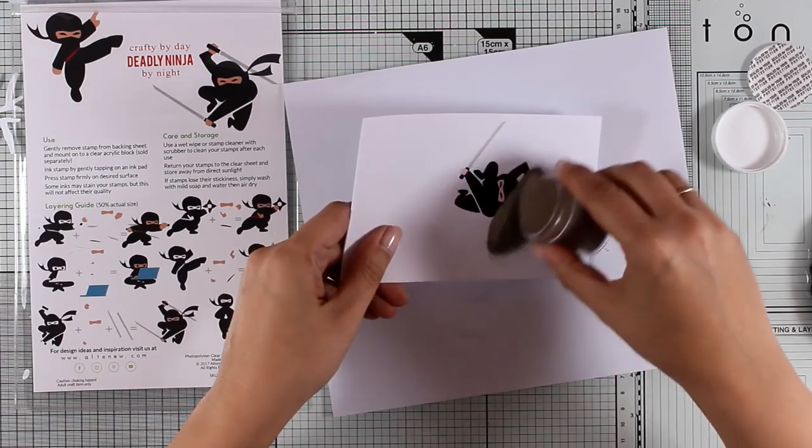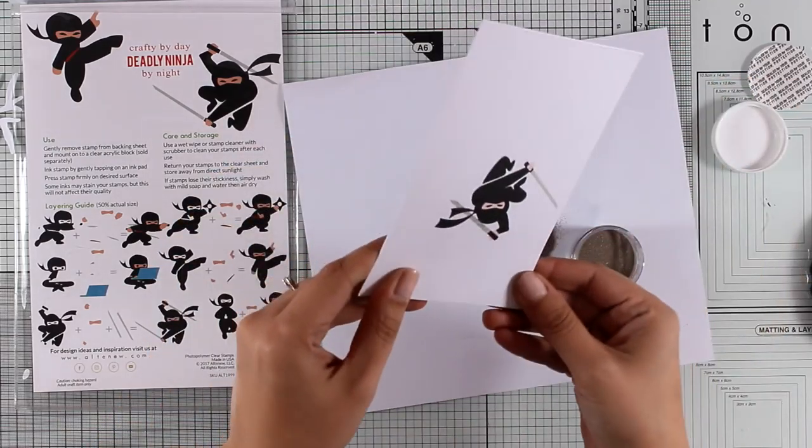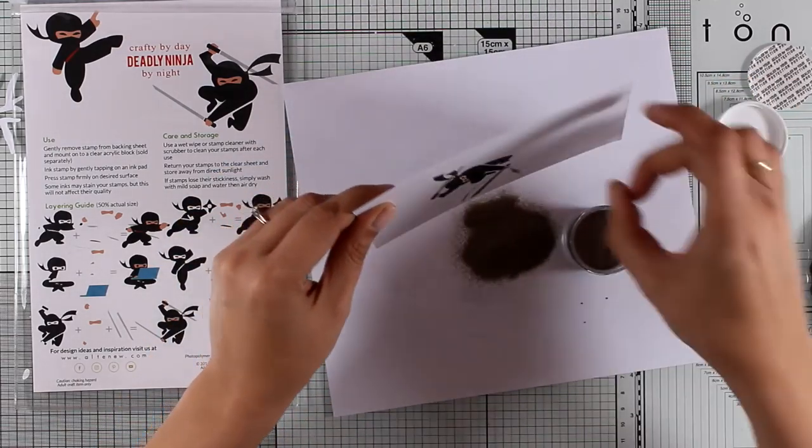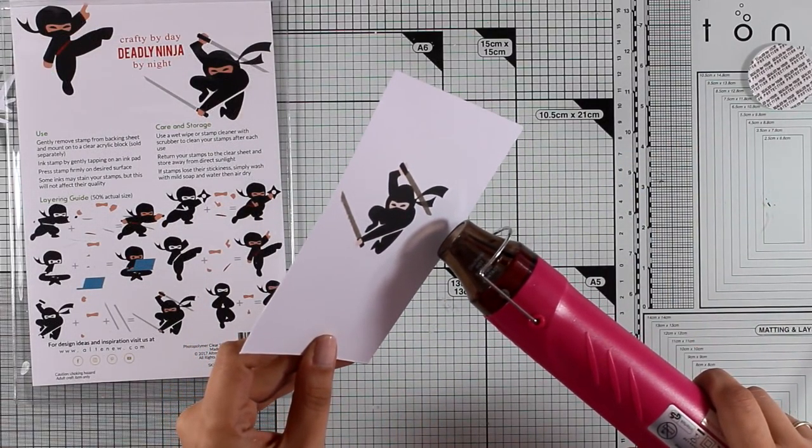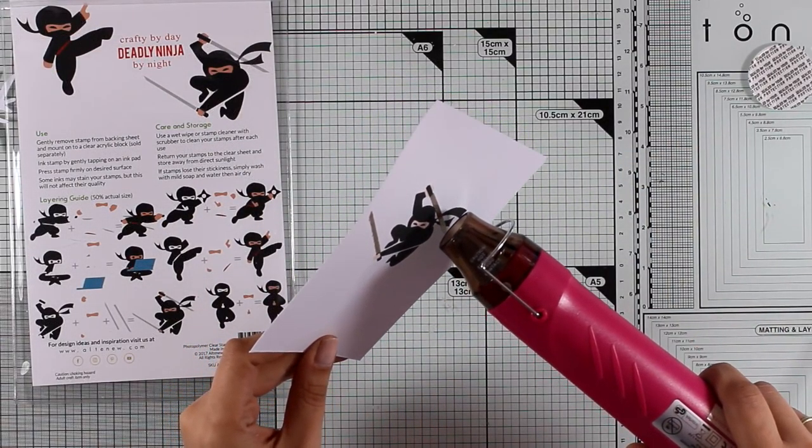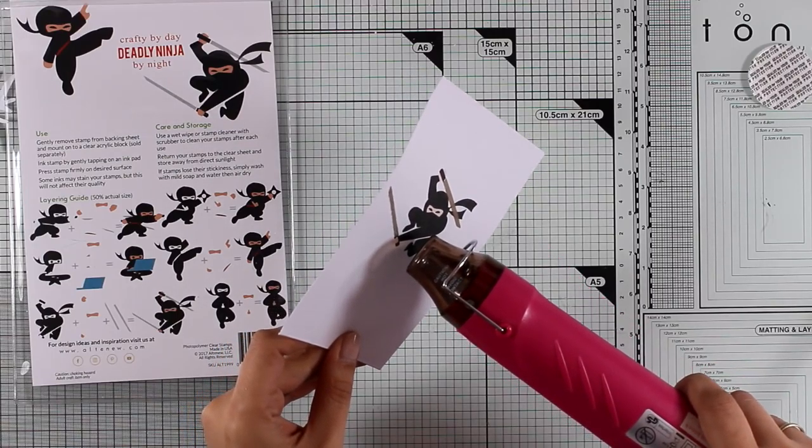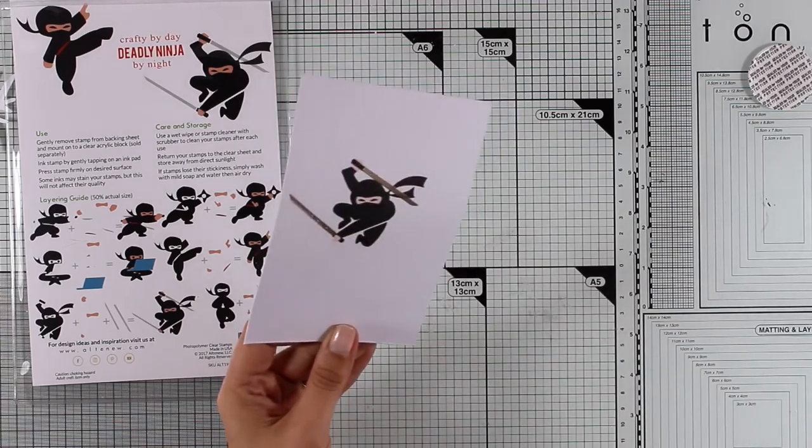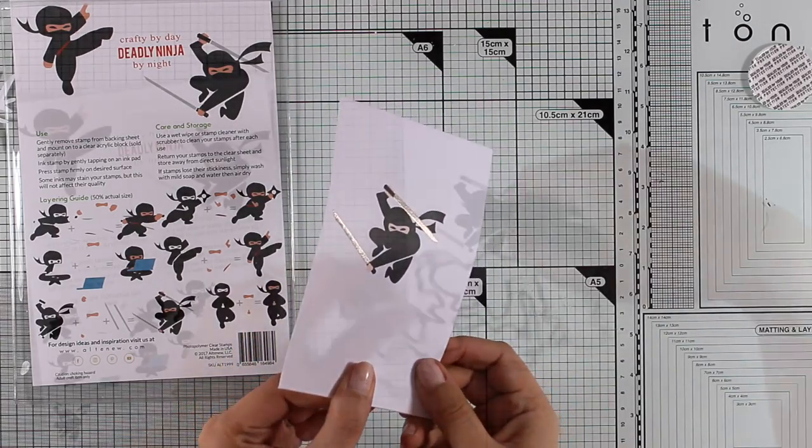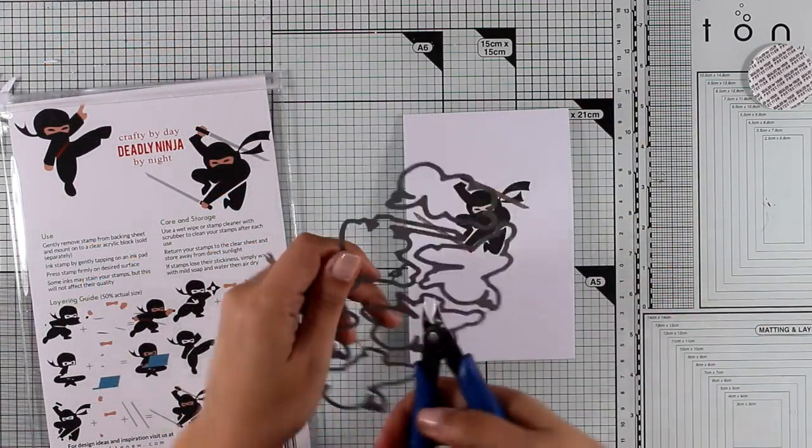I'm using my heat gun to melt the embossing powder, and this is going to give a beautiful shine on the swords and a more realistic look. And now I'm going to use the matching dies to cut out my ninja.